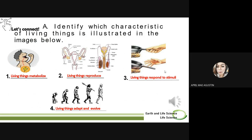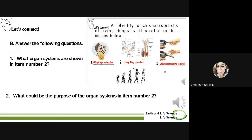Very good. Let's check your answers later. Let us now have your second virtual activity. You are just going to answer the following questions. Number one, what organ systems are shown in item number two? Second question, what could be the purpose of the organ systems in item number two? Kindly comment down your answer together with your complete name and section, as that will serve as your attendance for this class.